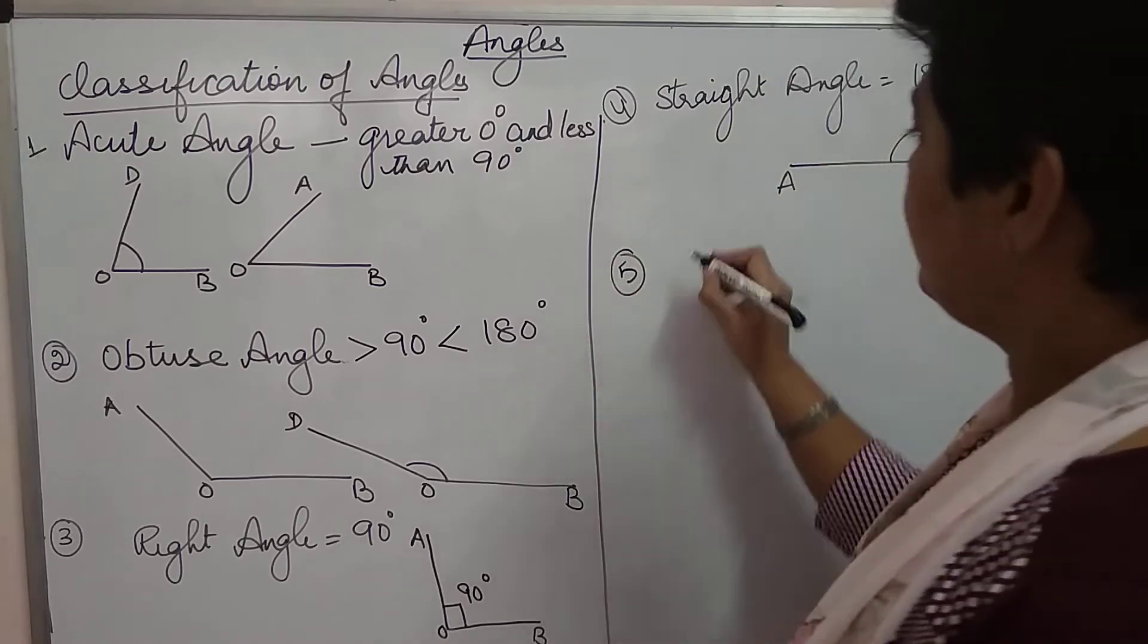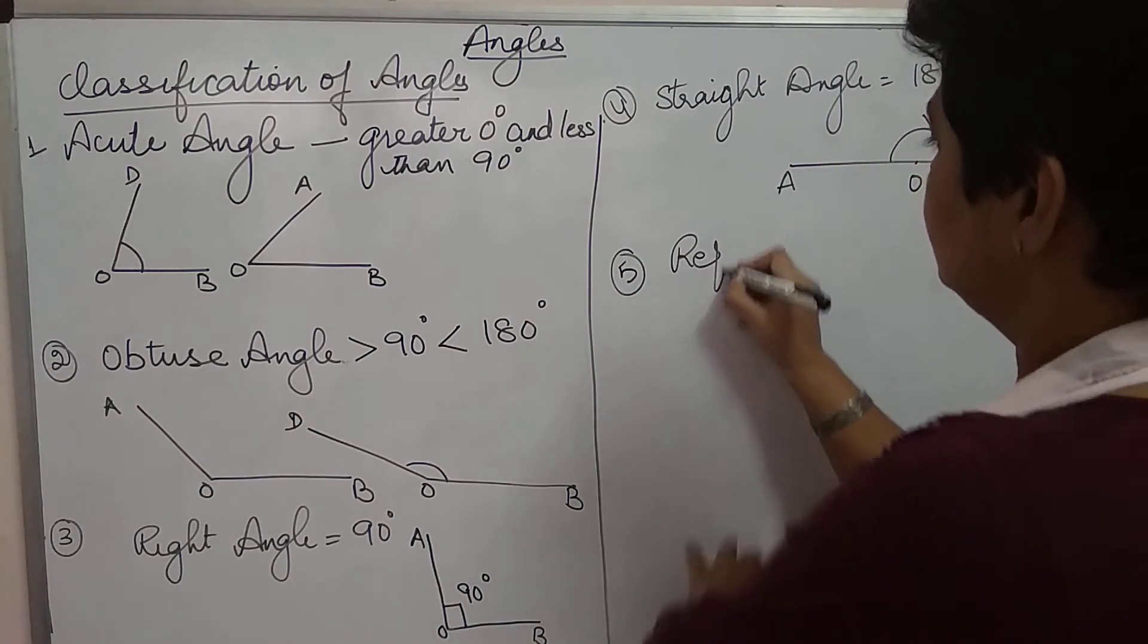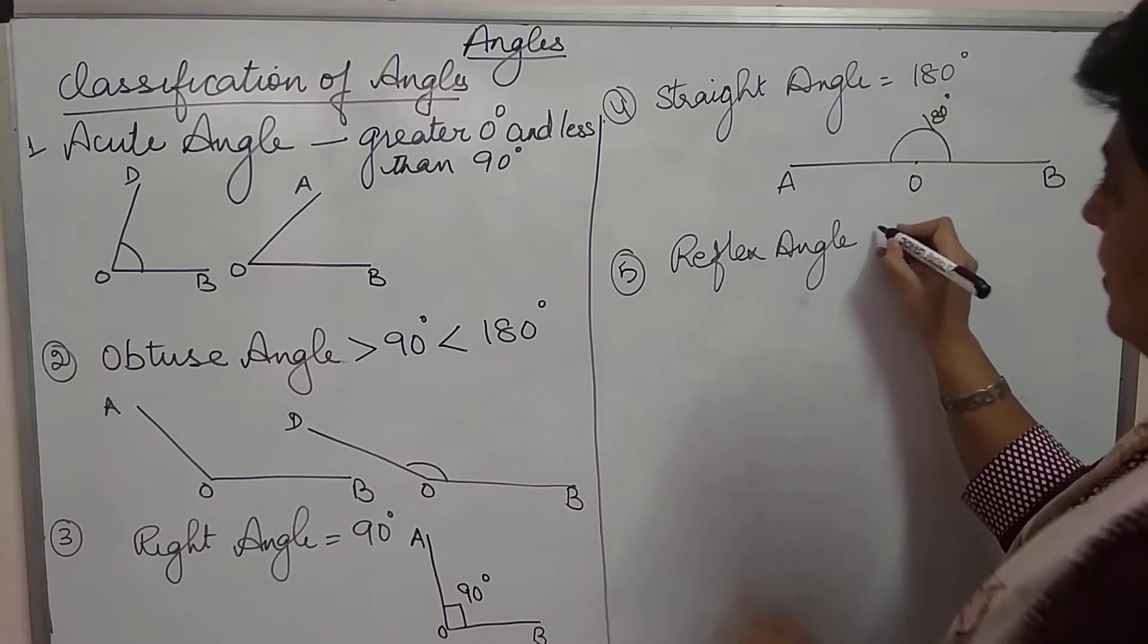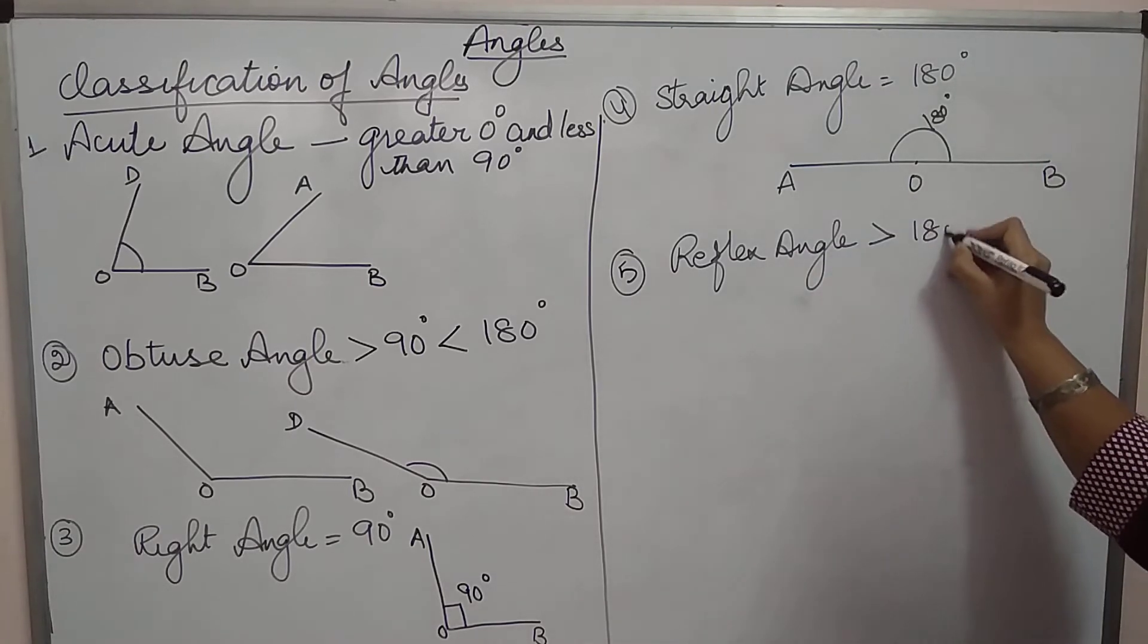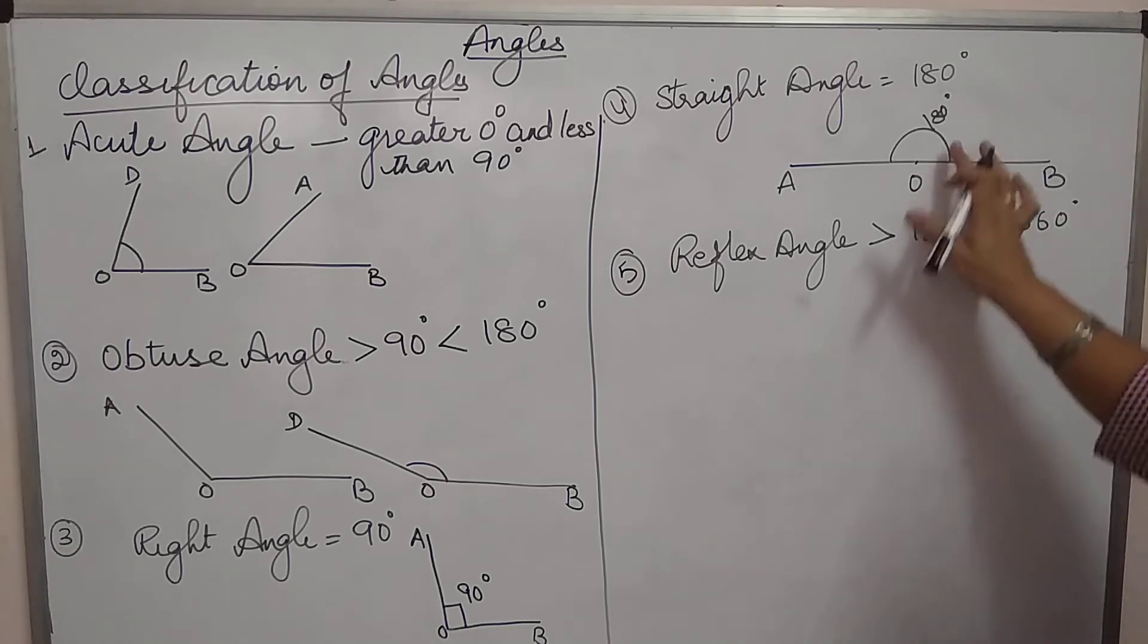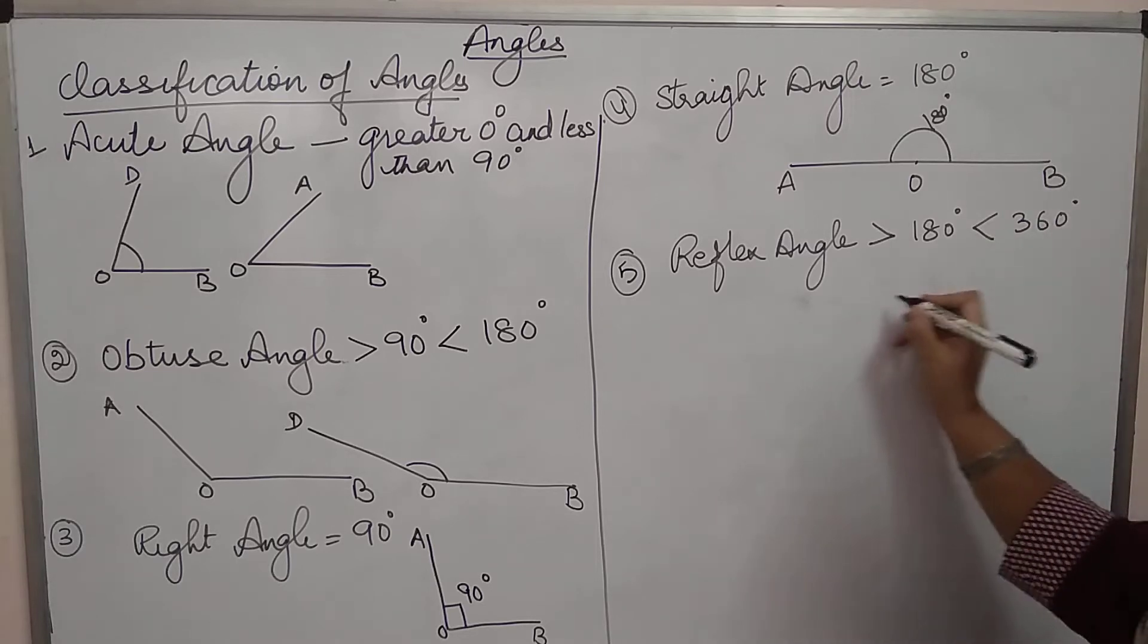Then comes reflex angle. Reflex angle is greater than 180 degree but less than 360 degree. So, it means something bigger than this.